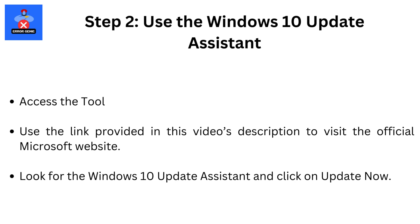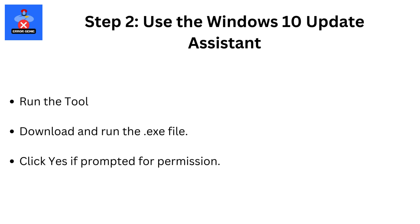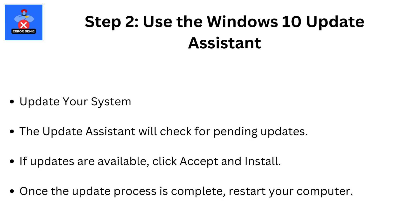Step 2: Use the Windows 10 Update Assistant. Use the link provided in this video's description to visit the official Microsoft website. Look for the Windows 10 Update Assistant and click on Update Now. Download and run the .exe file. Click Yes if prompted for permission. The Update Assistant will check for pending updates. If updates are available, click Accept and Install.